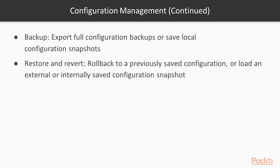You want to make sure you understand how to do an audit before you implement any future changes. Backups should be mandatory — you can perform full backups or save local config snapshots. You can save a named snapshot with a custom label, or just save the running snapshot. Every time you commit, it will add a snapshot to the config database. We're also going to look at restoring a backup, and the difference between restore and revert.